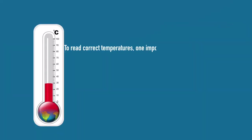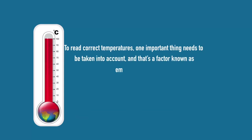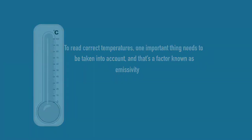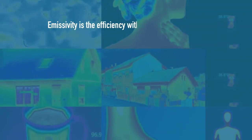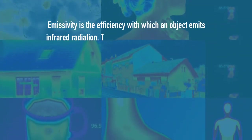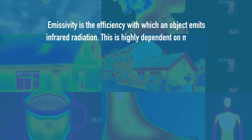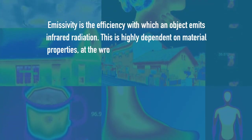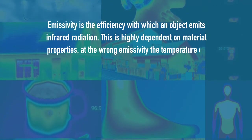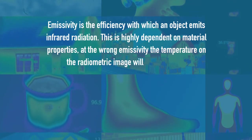To read correct temperatures, one important thing needs to be taken into account. And that's a factor known as emissivity. Emissivity is the efficiency with which an object emits infrared radiation. This is highly dependent on material properties. At the wrong emissivity, the temperature on the radiometric image will be inaccurate.